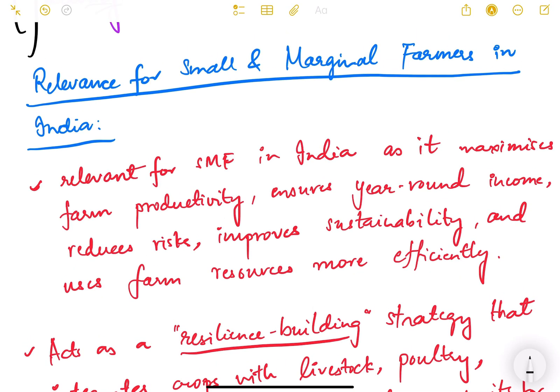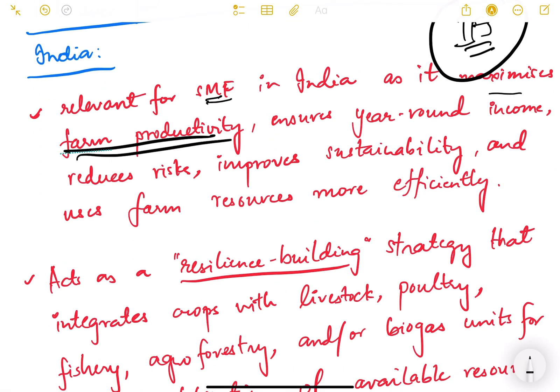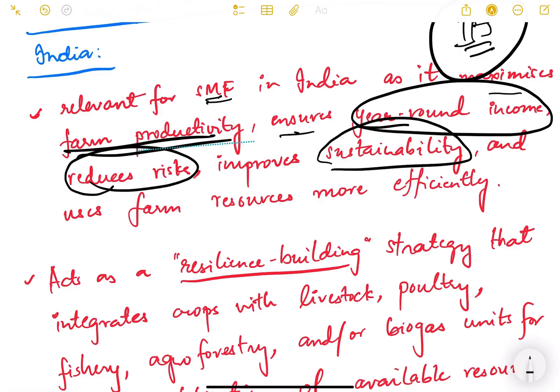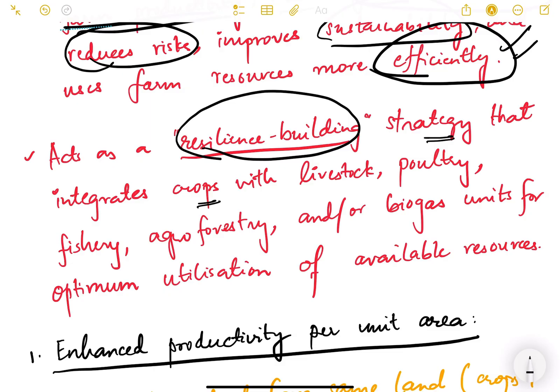What is the relevance for small and marginal farmers in India? IFS is relevant as it maximizes farm productivity, ensures year-round income, reduces risks, improves sustainability, and uses farm resources more efficiently. It acts as a resilience-building strategy that integrates crops with livestock, poultry, fishery, agroforestry, and biogas units. Resource utilization efficiency also increases tremendously so that within a small patch of land with less resources, more income can be generated and it can be sustainable.